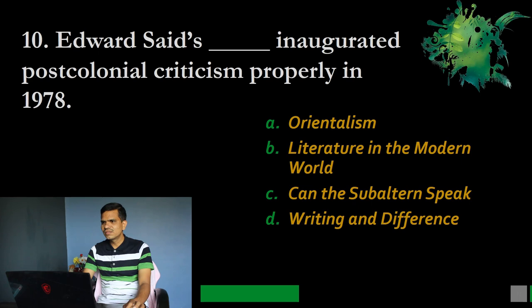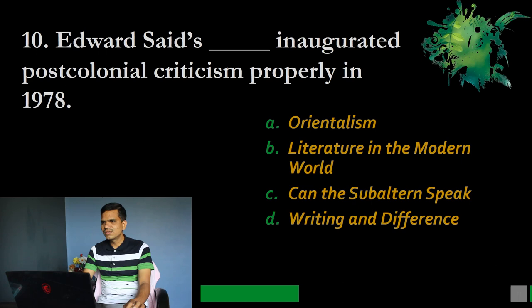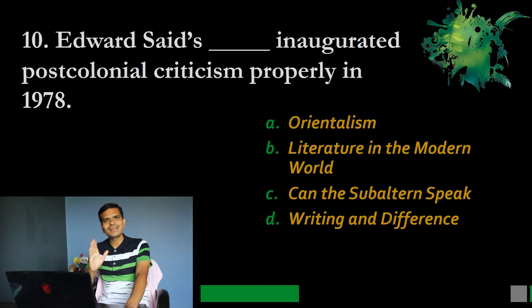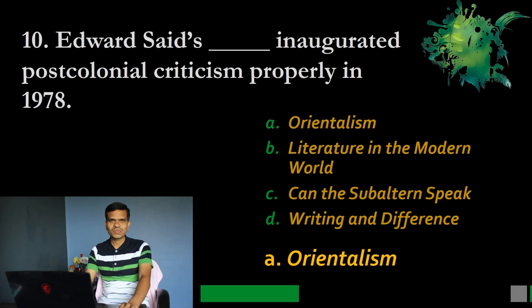Question number 10: Edward Said's dash inaugurated post-colonial criticism properly in 1978. Options: A. Orientalism, B. Literature in the Modern World, C. Can the Subaltern Speak?, D. Writing and Difference. The correct option is A, Orientalism. This text properly inaugurated post-colonial criticism in 1978.